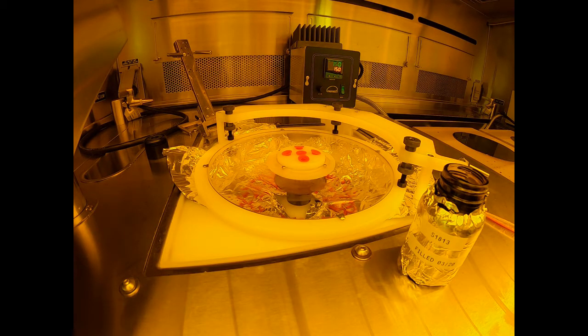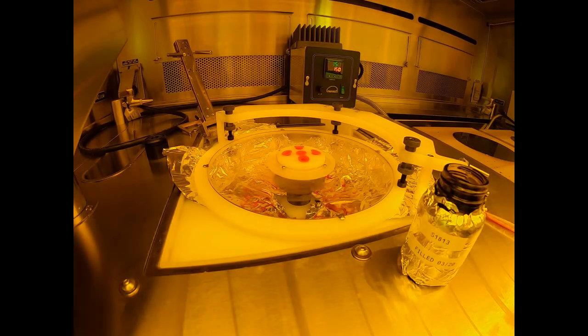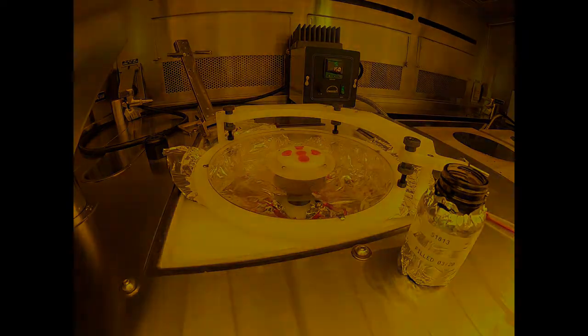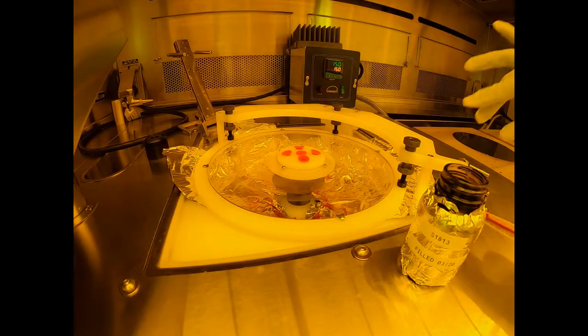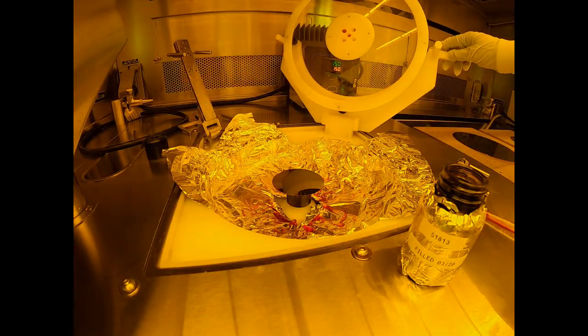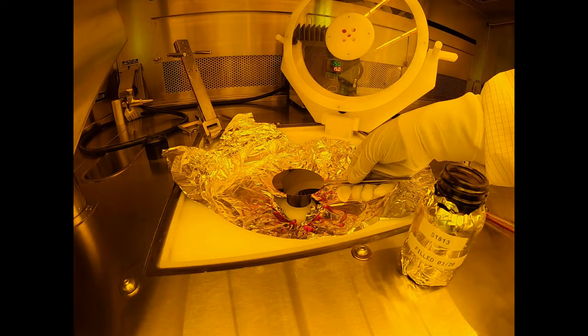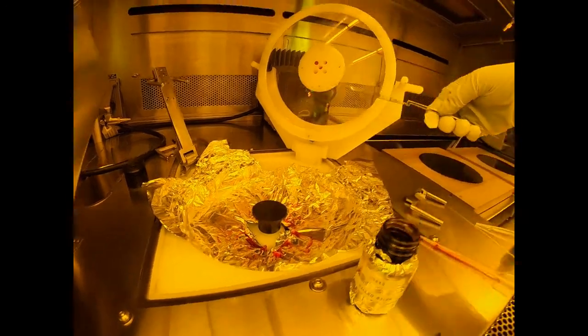The centrifugal force from the rotation pushes some photoresist outwards, creating a thin film of photoresist on the surface. After some time, the sample is removed and baked on a hot plate to evaporate the solvent from the polymer.